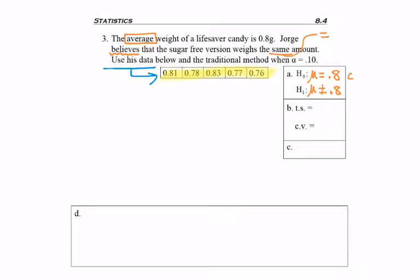So it says to use his data. So we're not given any values, sample averages. We have to create that ourselves. So from that data, you would plug it into your calculator and get a sample average of 0.79 grams for the weight of these Lifesavers.